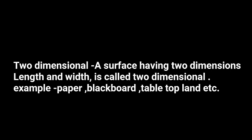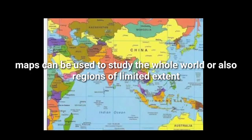What are the examples? Examples of two-dimensional objects include paper, blackboard, table, and top lands. Maps are two-dimensional whereas a globe is three-dimensional.